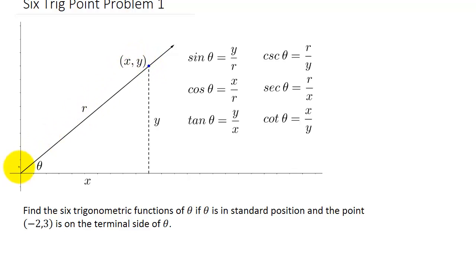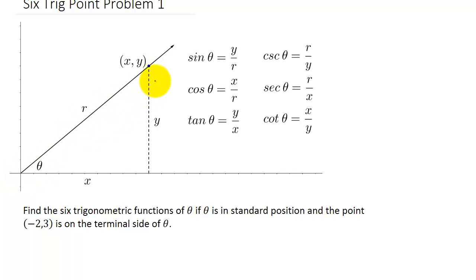The distance from the origin horizontally to the point is x, because when we plot the point we go over x units. The distance vertically is y, because we go over x and up y. The distance from (0, 0) to where the point is — that's r. And this is a right angle.